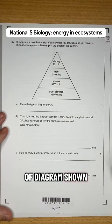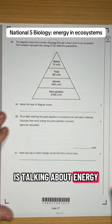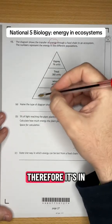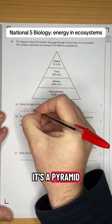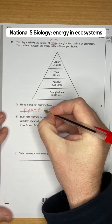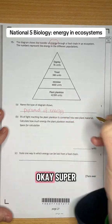Name the type of diagram shown. Okay, so this is talking about energy. Therefore it's in a pyramid shape. It's a pyramid of energy. Okay, super.